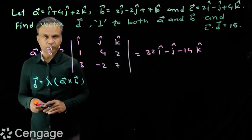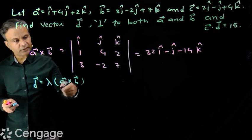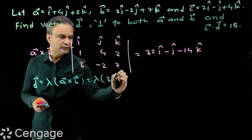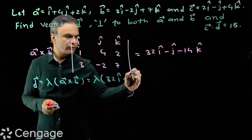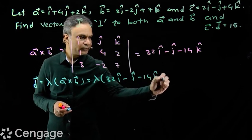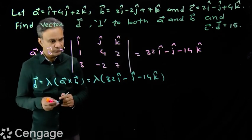We don't know d's modulus. So what will we write for d? Lambda times a cross b, or lambda times vector 32i minus j minus 14k.